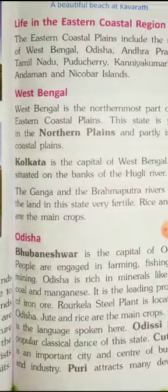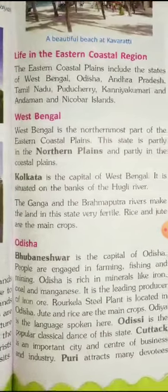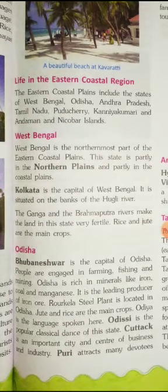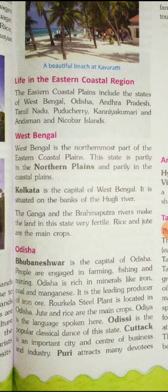Now we will know about Odisha. The capital of Odisha is Bhuvaneshwar. The main occupations of people are farming, fishing and mining. Many minerals like iron, coal and manganese are found here. Odisha is the leading producer of iron ore. Rourkela steel plant is located here. The main crops which are grown here are jute and rice.